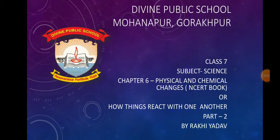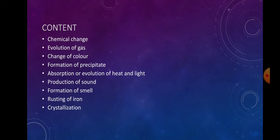Hello dear students, welcome back to the video classes of Class 7 Science. Today we are going to learn about Chapter 6, 'How Things React with One Another,' also named as Physical and Chemical Changes in your NCERT book. This is Part 2 of this chapter. In this part we will learn about chemical changes: evolution of gas, change of color, formation of precipitate, absorption or evolution of heat and light, production of sound, formation of smell, rusting of iron, and crystallization.